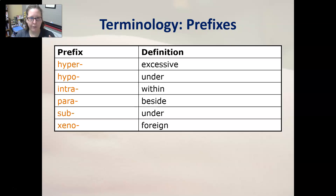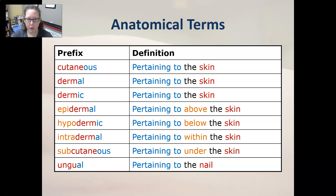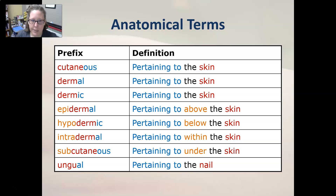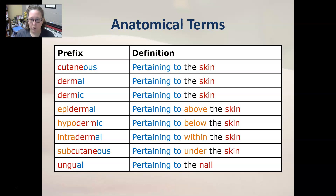Intra- is within, para- is beside, sub- is under, and xeno- is foreign — back to the graft example, a xenograft would be a graft from an animal or something not human. A lot of these anatomical term endings mean pertaining to, so it's good to learn words in context. Cutaneous is pertaining to the skin, as is dermal and dermic. Epidermal is pertaining to above the skin, hypodermic is pertaining to below the skin, intradermal is pertaining to within the skin, subcutaneous means under the skin, and ungual is pertaining to the nail.